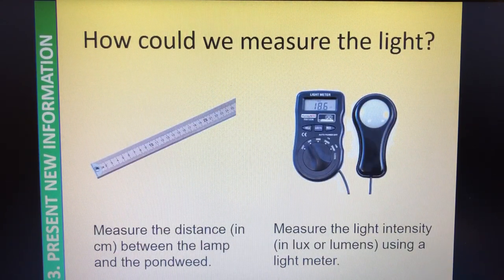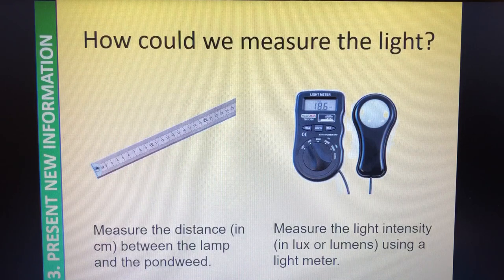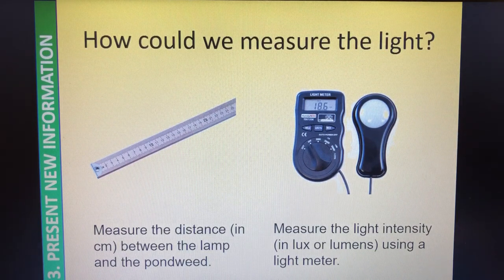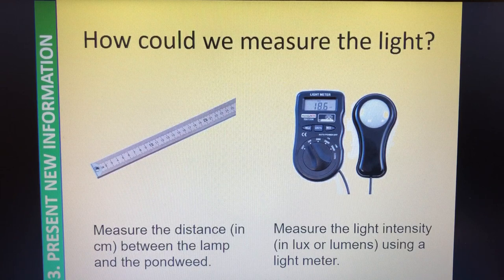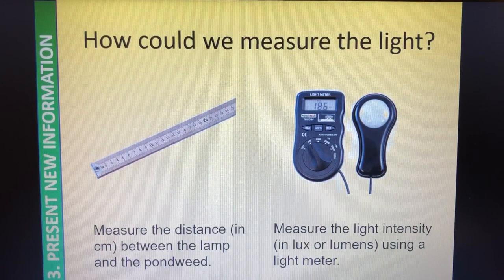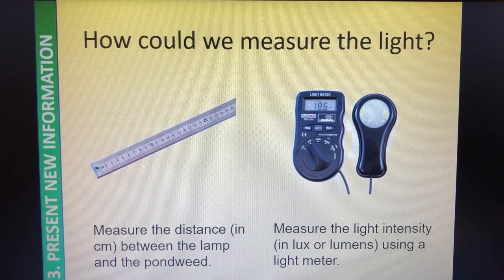We are measuring the light intensity either by measuring the distance in centimetres between the lamp and the pondweed, or we could use a light meter - which is how we're going to get our results today. Looking at the light intensity measured in lux or lumens using a light meter. This part of the light meter is put in front of the light where the pondweed is, and it will tell you the light intensity. So there are two ways of measuring the light: distance of the lamp to the pondweed, and looking at the light intensity. If you need to pause, pause now.